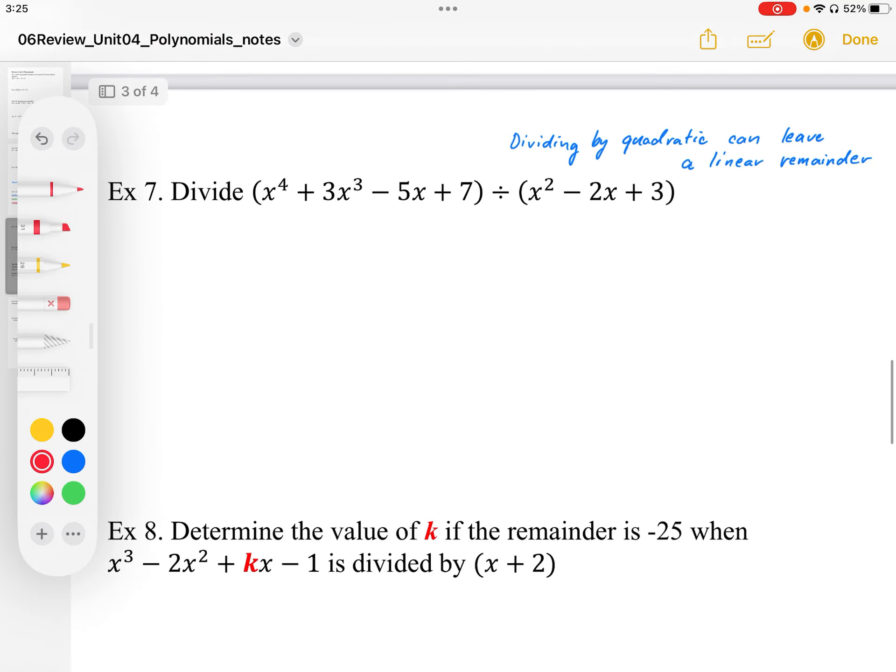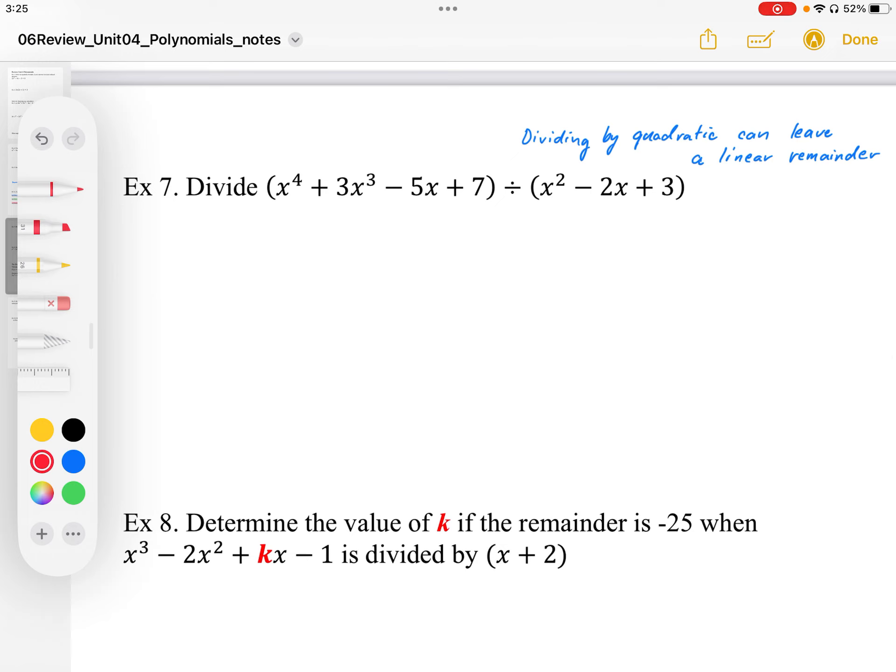In example 7, we're going to divide a 4th degree polynomial by a quadratic. So when we divide by a quadratic, we can have a linear remainder. Now it doesn't have to be linear, it could be a constant value, but we can have a linear remainder. Just like when we divide by a linear function, our remainder is a constant.